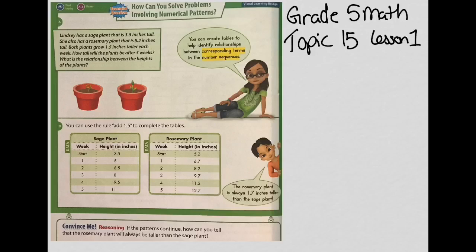So in the problem, Lindsay has a sage plant that's 3 and a half inches tall and a rosemary plant that's 5 and 2 tenths inches tall, and each plant is growing at the same rate — 1 and a half inches taller each week. When you're told there's a consistent increase, we call that a rule. The rule here is continuing a certain pattern, and we're going to be adding 1 and a half inches to complete the tables.